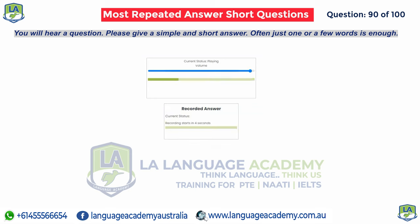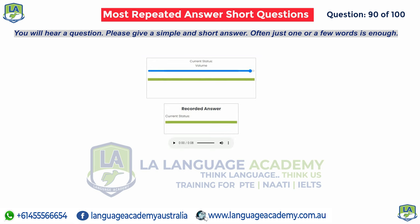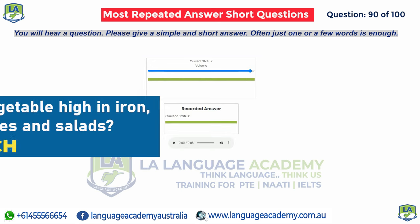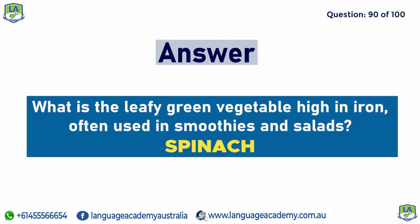What is the leafy green vegetable high in iron, often used in smoothies and salads? Spinach.